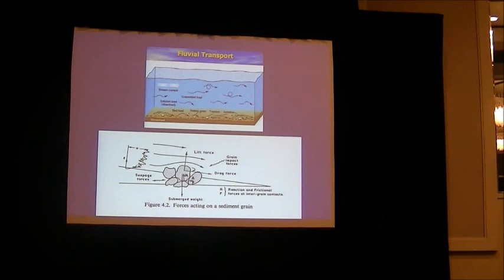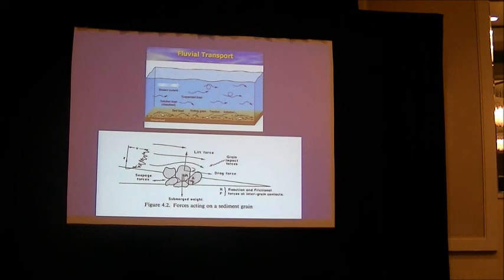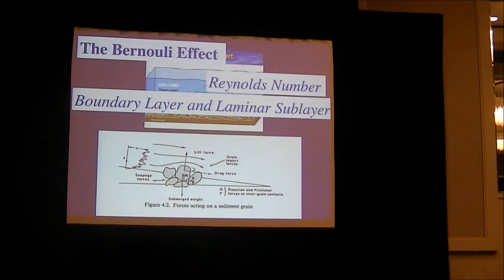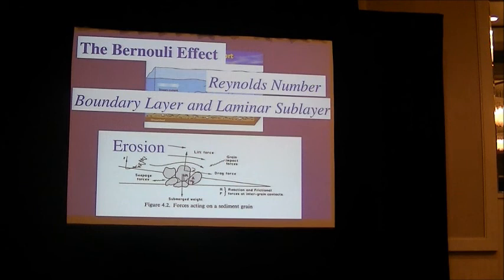The second process is keeping that sediment particle suspended. Getting it eroded and up into the water column is one part, but transporting it from the Himalayas down to the continental margin of the delta requires a continuous force of energy to maintain that particle suspended in the water column. These fundamental processes include the boundary layer and laminar sublayer, the Reynolds number — critical for knowing exactly when the transition from one physical regime to another occurs — and the Bernoulli effect. We have to put in juxtaposition erosion, transport, and deposition.